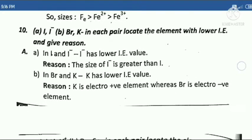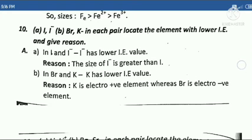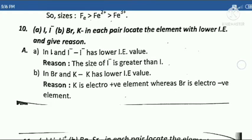Tenth question: A. I and I⁻, B. Br and K⁻ — in each pair locate the element with lower IE and give reason.